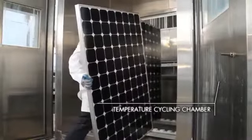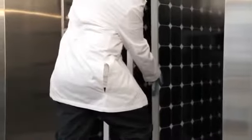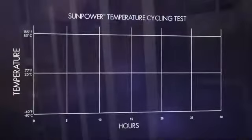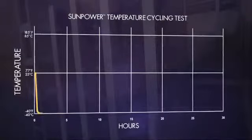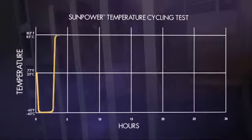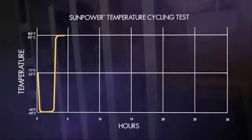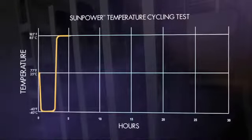This is the temperature cycling chamber, designed to simulate real-world temperature changes for over two and a half decades. Inside, solar panels are subjected to rapidly changing temperatures. First, the temperature falls to negative 40 degrees Fahrenheit. Then it rises to 185 degrees Fahrenheit. All in under five hours.